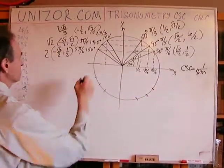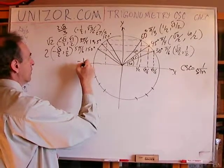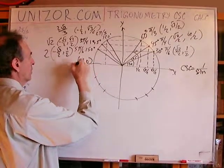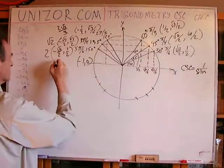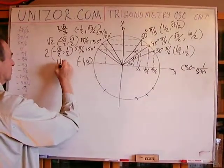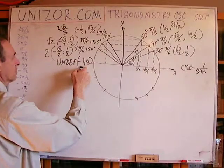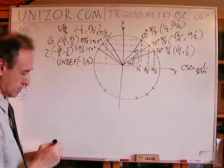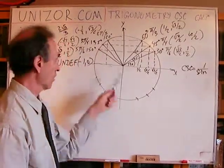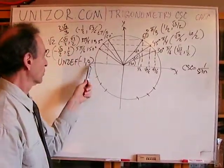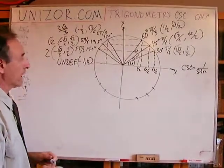Next is pi — 180 degrees. It has coordinates minus one, zero, and the cosecant is obviously undefined because we cannot divide by zero. The cosecant doesn't exist for a 180-degree or pi angle.